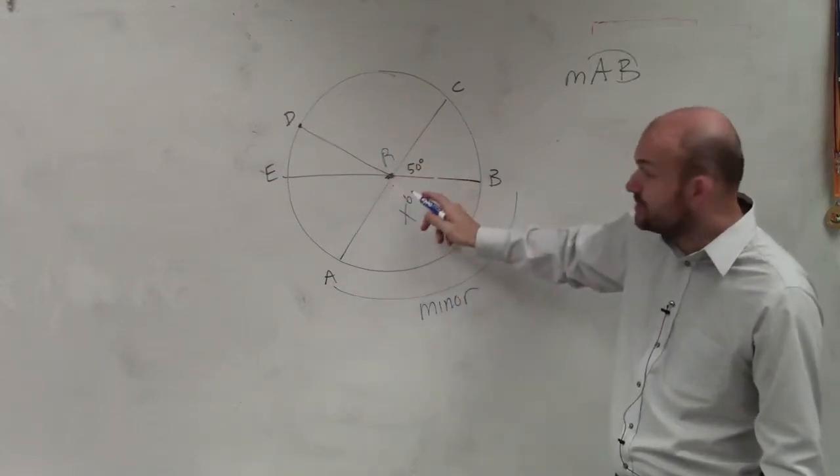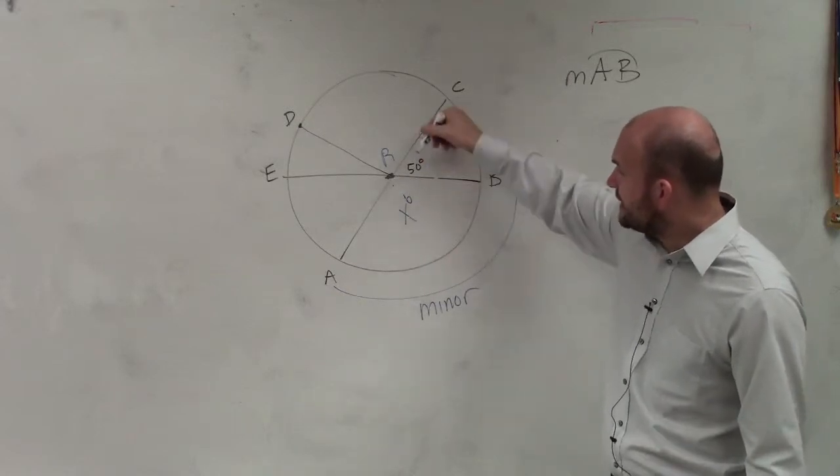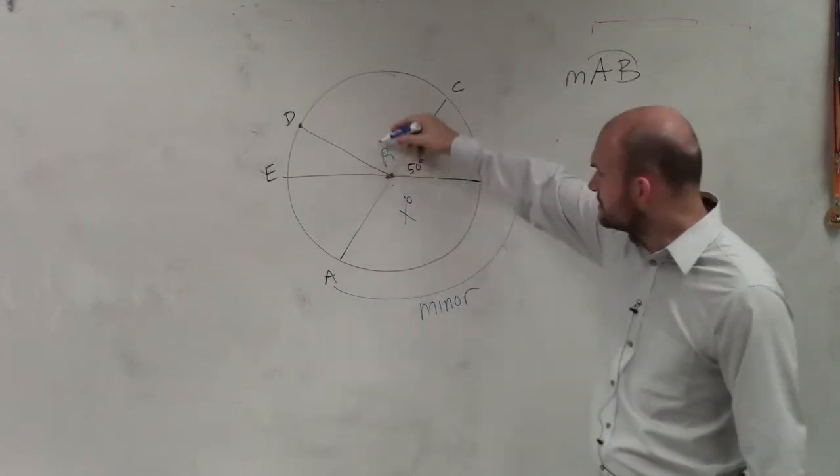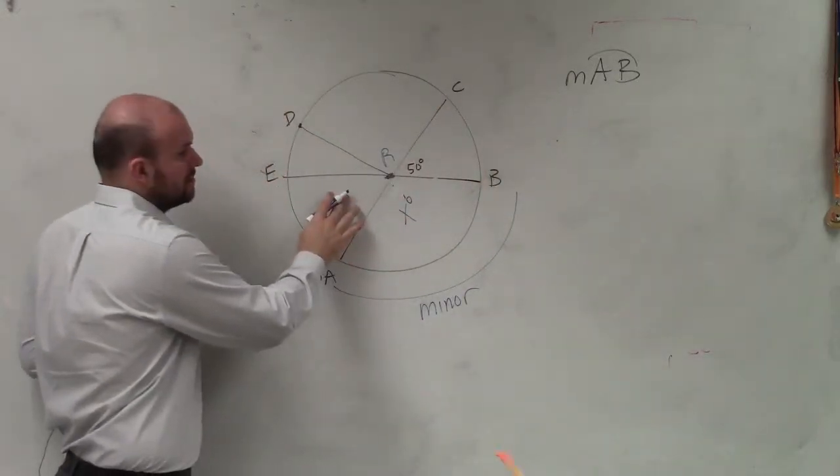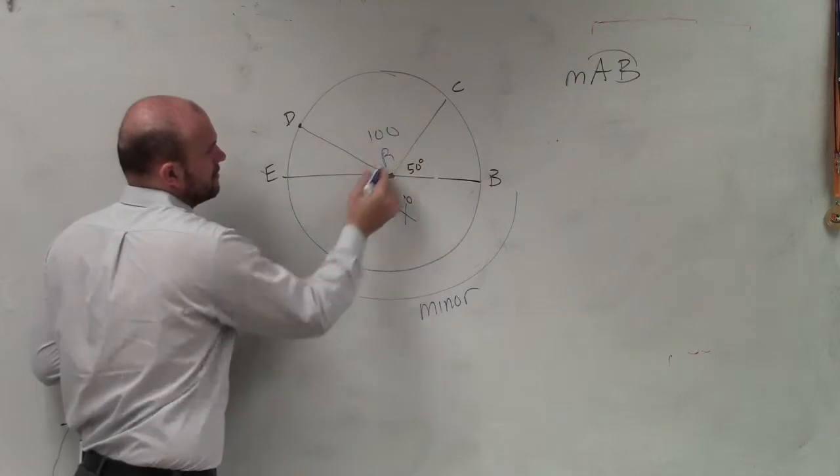So to find the minor arc, we need to know the measurement from x degrees. They gave us 50 degrees here, and wasn't this one like 130? Which one's 100? And the x is off R.